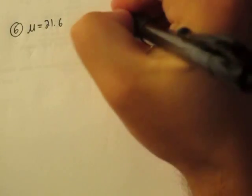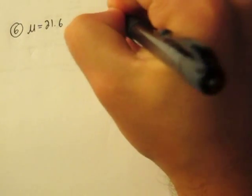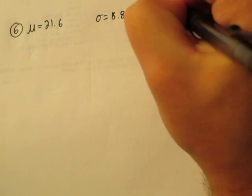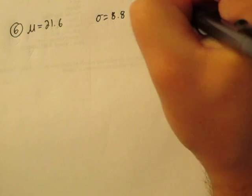In the elephant problem, we're given a mean, a standard deviation, and a sample size of 64.